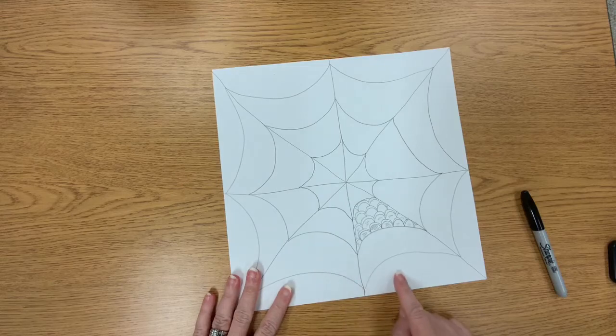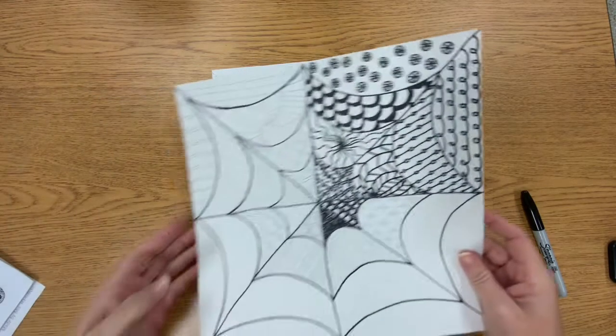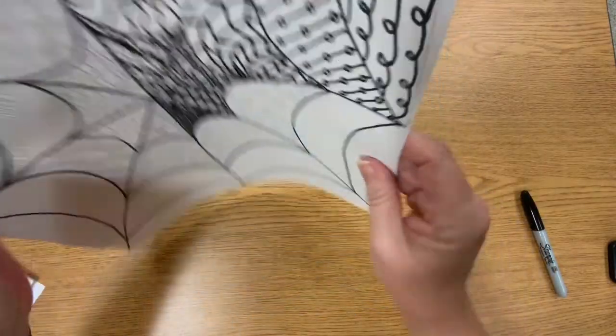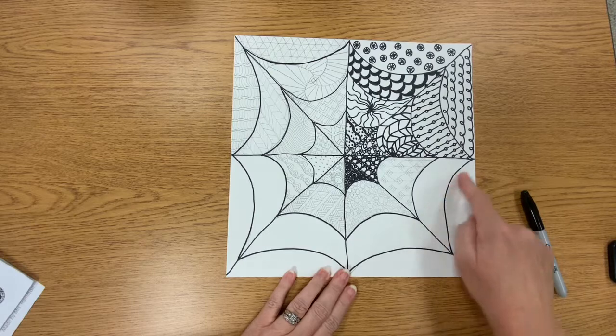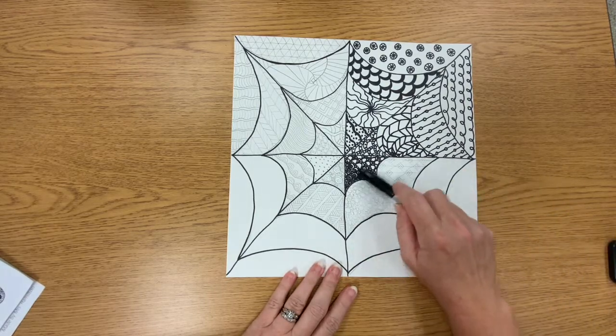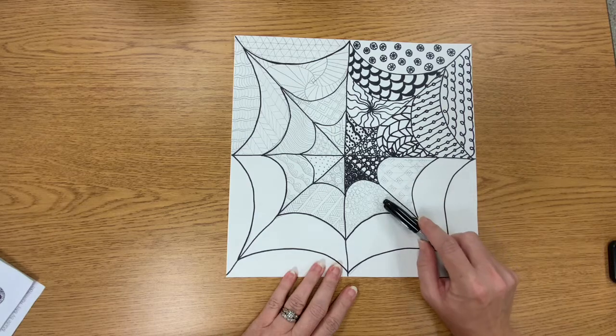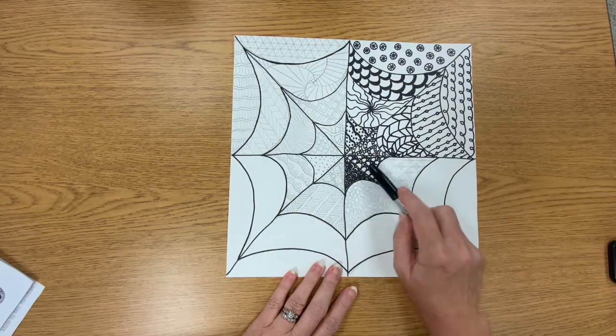Once you get them all filled in, then you are going to start tracing them with Sharpie. You can see that I've traced the outline of the spider web first, and then I'm going to come in. Here are some of my pencil ones, and then these are the ones I've traced.